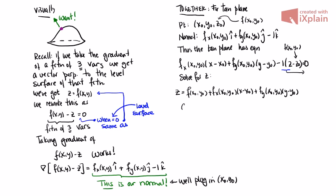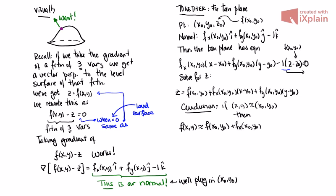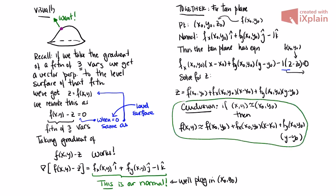The conclusion is: if (x, y) is approximately (x₀, y₀), then f(x, y) is approximately f(x₀, y₀) + fₓ(x₀, y₀)(x − x₀) + f_y(x₀, y₀)(y − y₀). This is the formula for tangent plane approximation that we're going to use. We'll do a couple of simple examples with it and then make a comment about what happens in three dimensions.